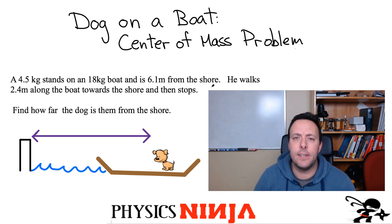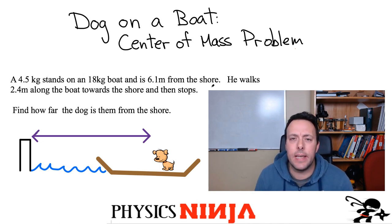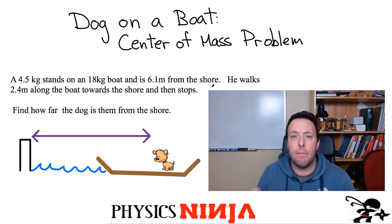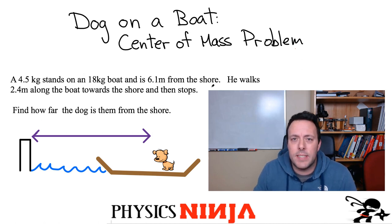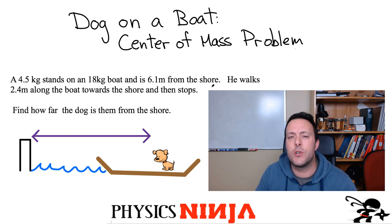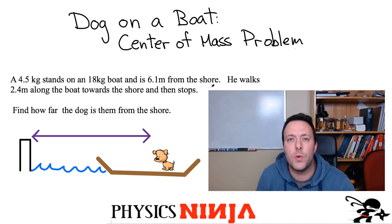Hi everybody, Physics Ninja here. Today I want to look at a classical example of a center of mass problem. It's a dog on a boat problem. A dog of a certain mass stands on a boat which has a larger mass, and it's originally about 6.1 meters away from the shore.